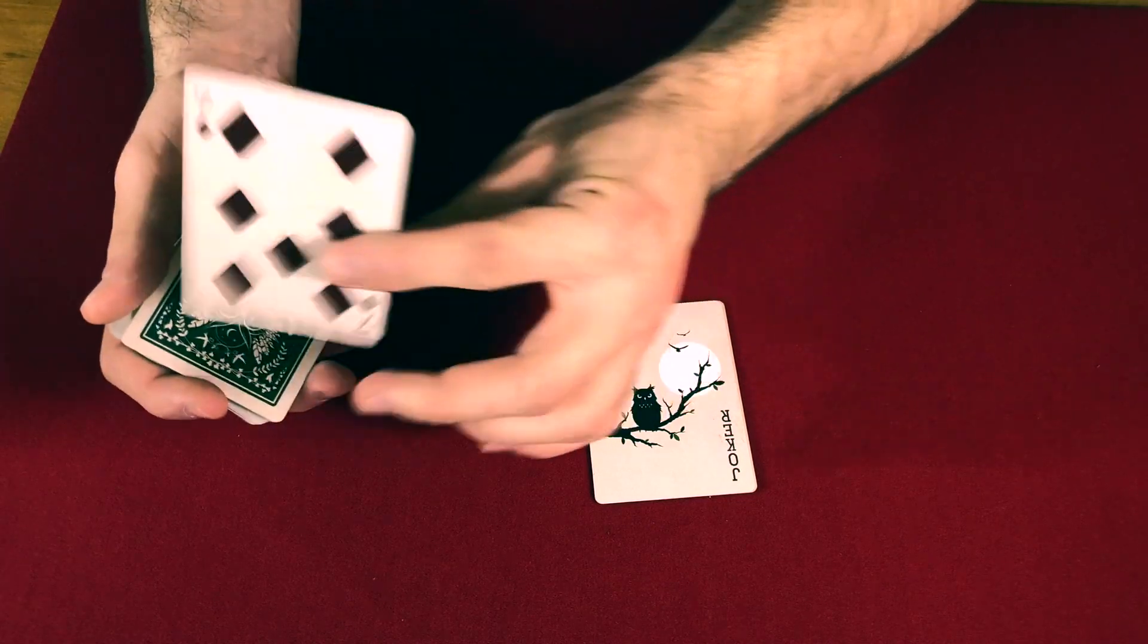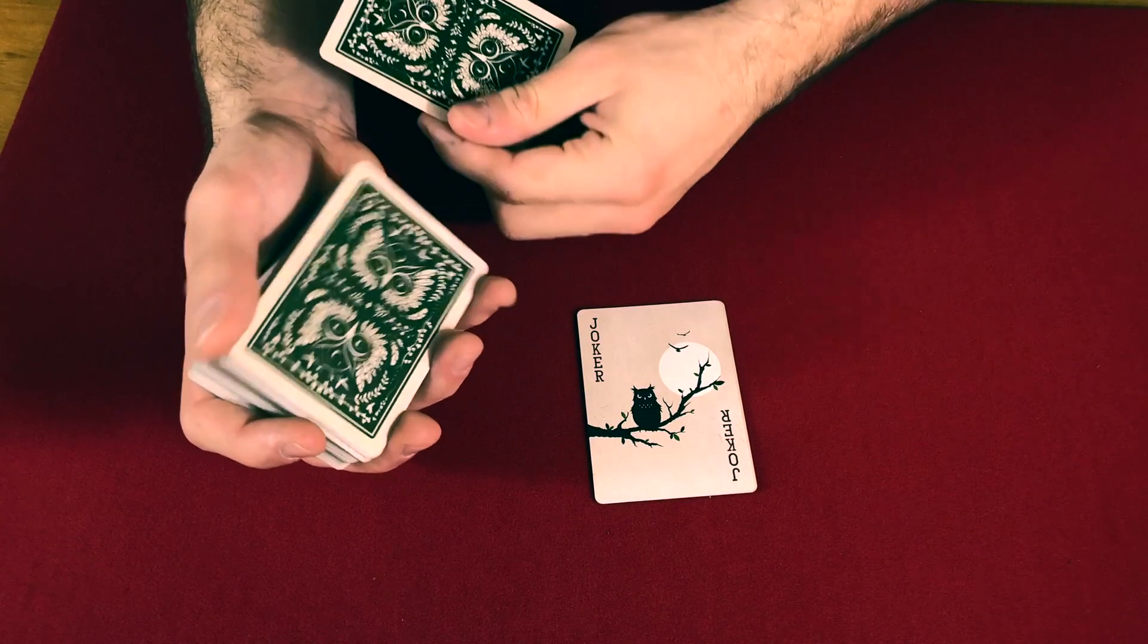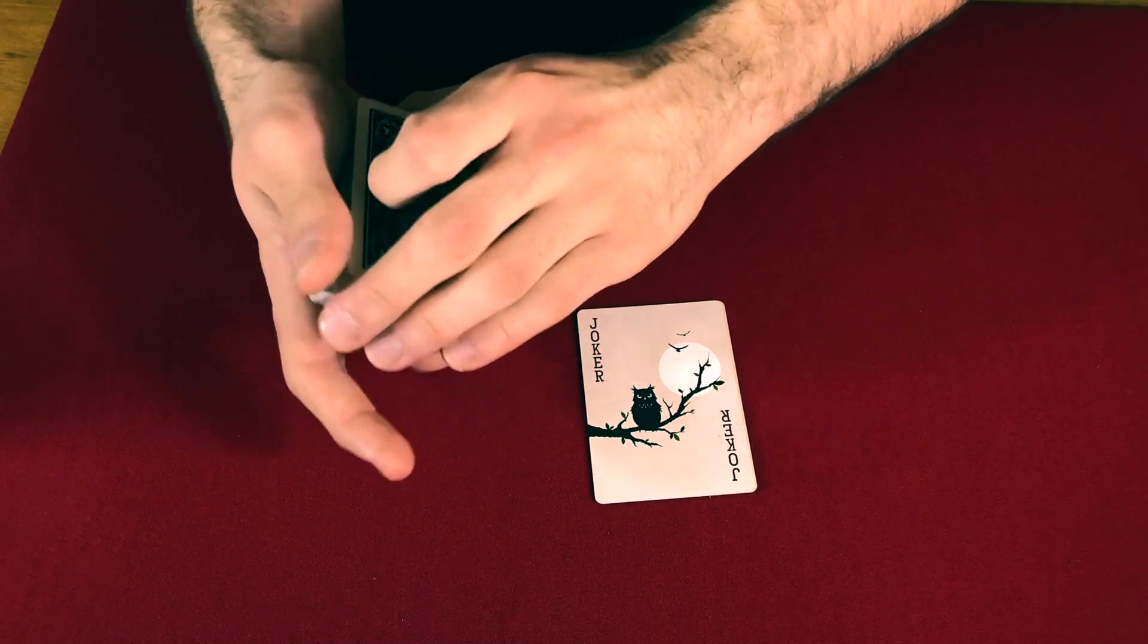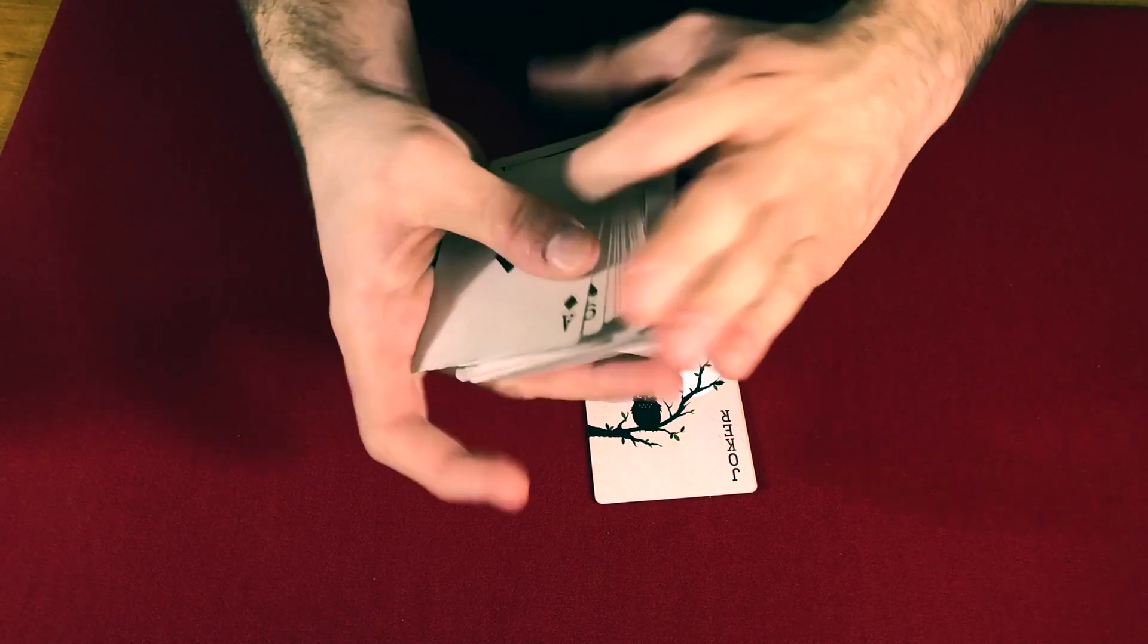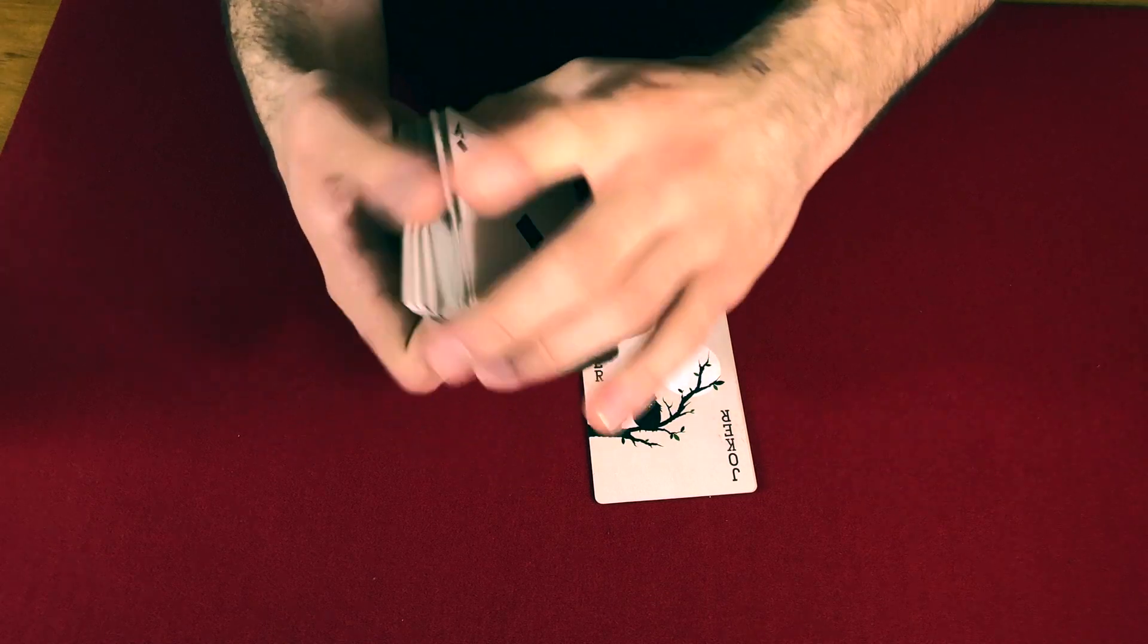So once the card is looked at and shown off to everybody, the card can then be placed roughly about the middle of the pack here. Nothing crazy. Just give the pack a bit of a shuffle and then we'll get to work.